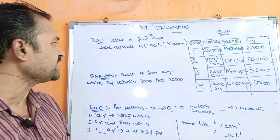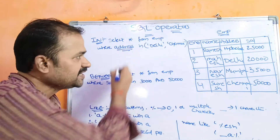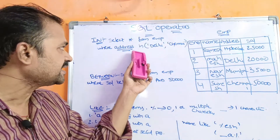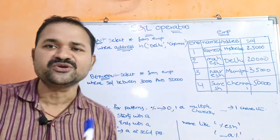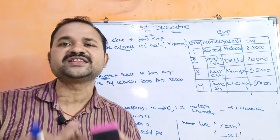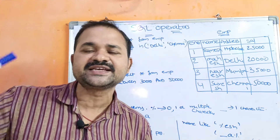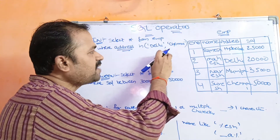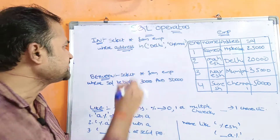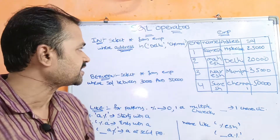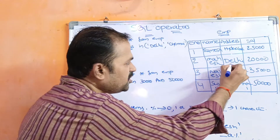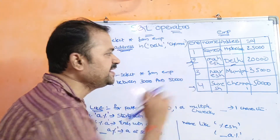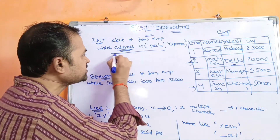Let us say: SELECT * FROM EMP WHERE address IN (list of values). So we can use either single quotation or double quotation. First value is Delhi, second value is Chennai. So Delhi is available in the address column, so this row will be displayed. Chennai is available here, so this row will also be displayed. So it will totally display two rows.